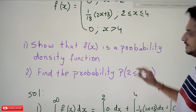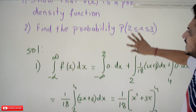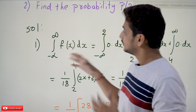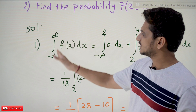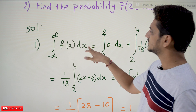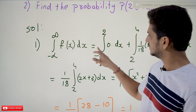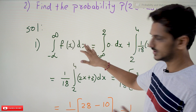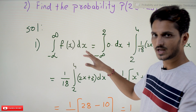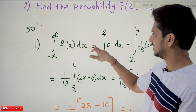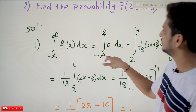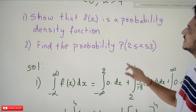Coming to the solution part: to show it is a probability density function, we need the integral from minus infinity to infinity of f(x) dx to equal 1. If it equals 1, we can accept it as a probability density function. This can be written by splitting based on the three parts of the function.